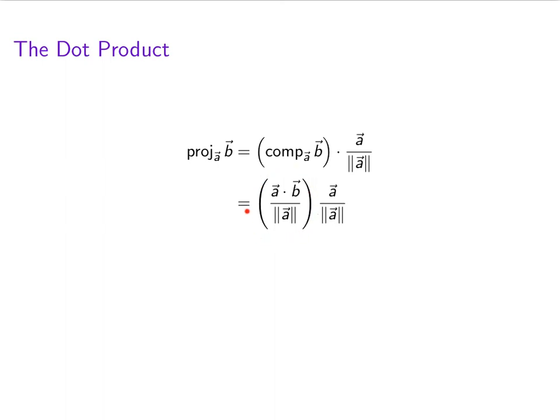Component of B in the direction of A is (A · B) / ||A||. And then we can move things around so we end up with (A · B) / ||A||² times the vector A.